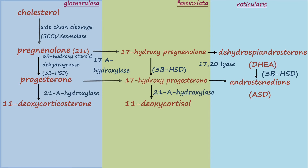Moving further down in the fasciculata layer, 11-deoxycortisol will be converted into cortisol. This reaction is catalyzed by 11-beta-hydroxylase. So in the fasciculata layer, we have cortisol as the major end product.